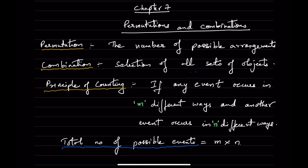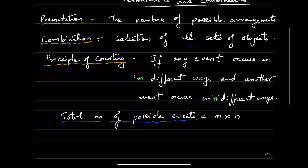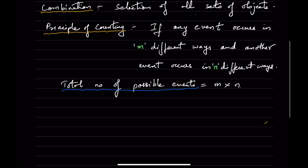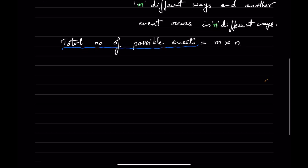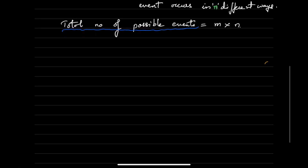We will take examples. But before that, we will see what is the principle of counting. If any event occurs in m different ways and another event occurs in n different ways, the total number of possible events is equal to m into n, or m cross n. This principle of multiplication we will be using in permutations and combinations.